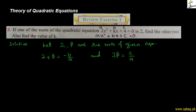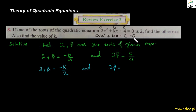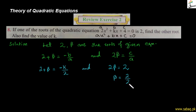ان values کو formulas میں درج کریں: 2 + β = −k/2، اور product 2β = 4/2 = 2۔ تو یہاں سے β = 2/2 = 1 آرہا ہے، یعنی دوسرا root 1 ہے۔